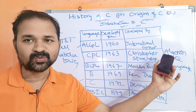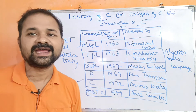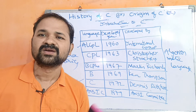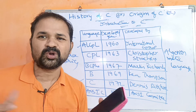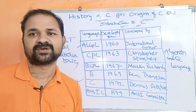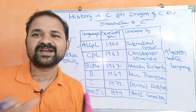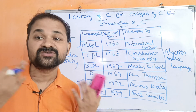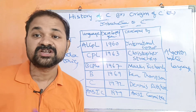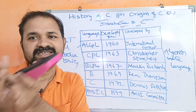ALGOL was developed by an international group in 1960. Six members from different countries developed it, that is why it is called an international group.